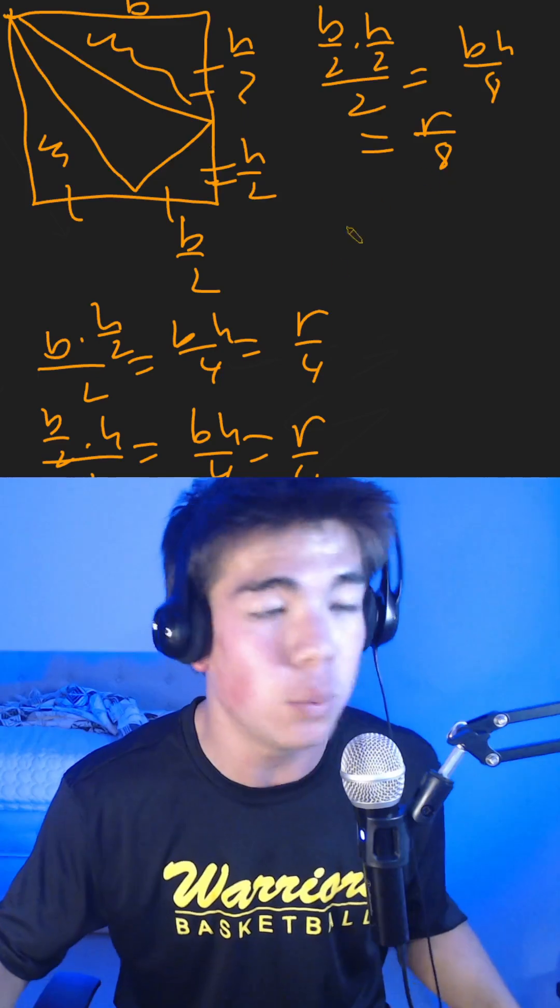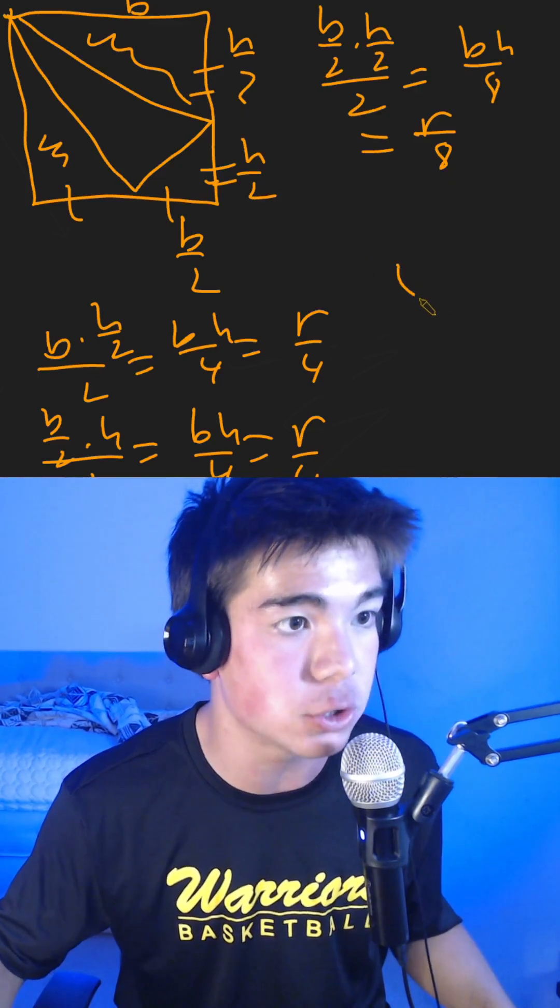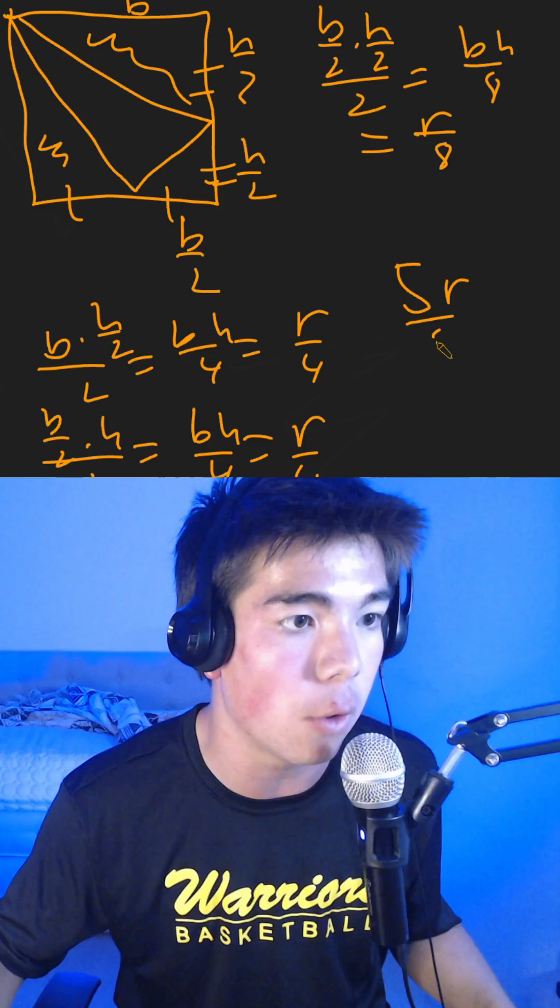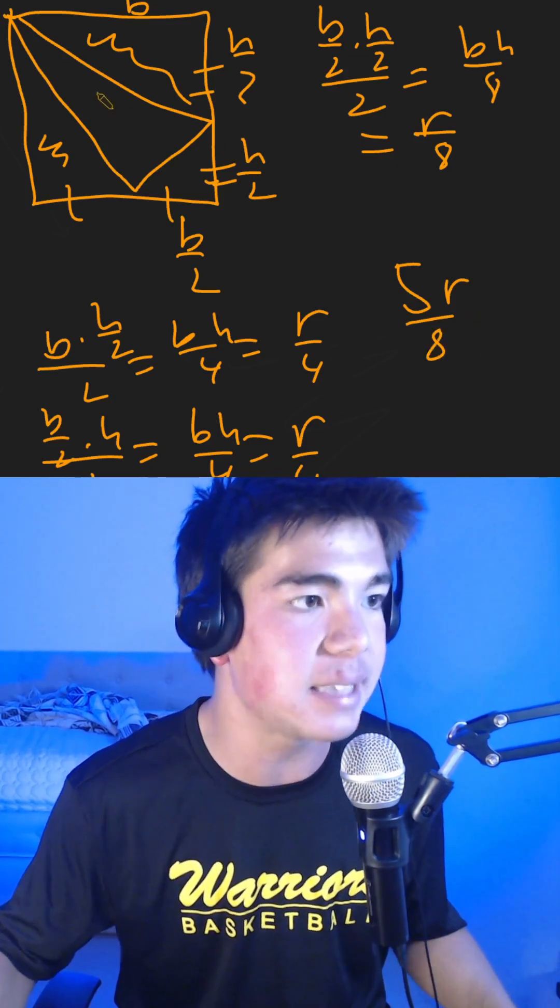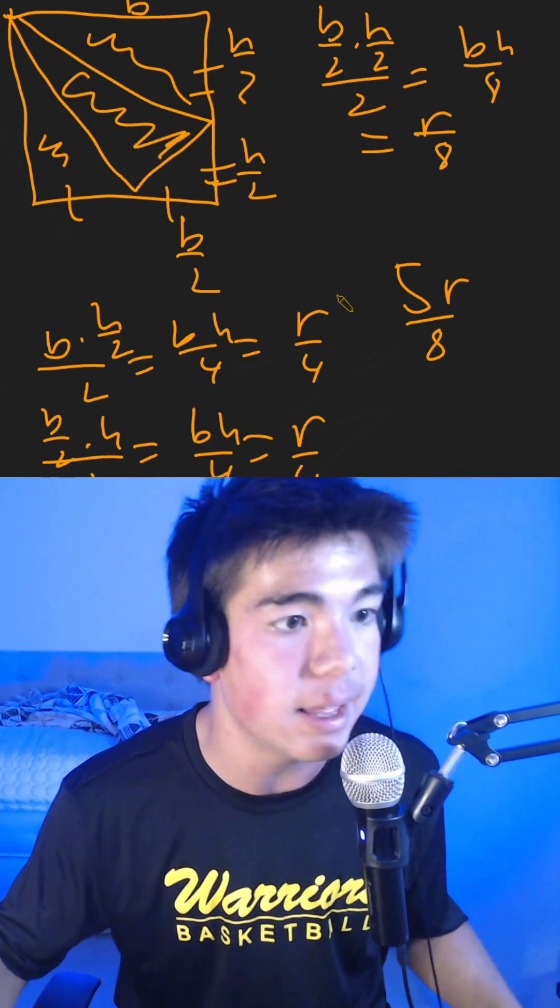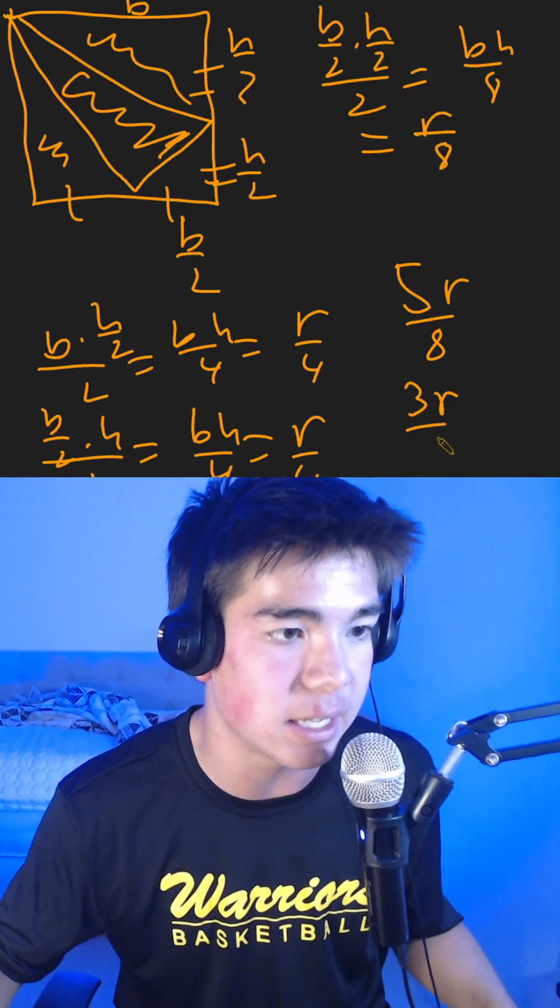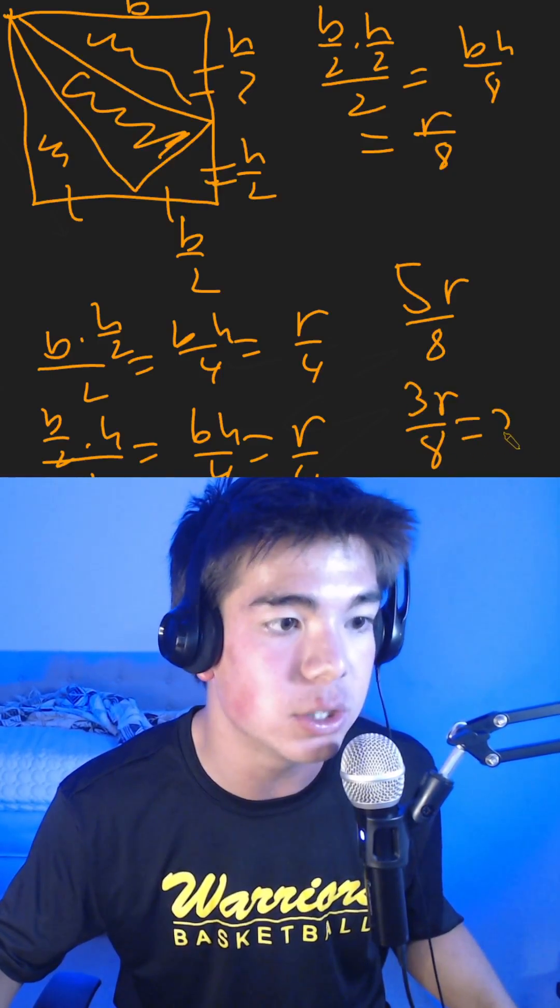Adding all three of these parts, we know that the area of all the other triangles is equal to 5 times the rectangle over 8. And that means that this area that we actually wanted is 3 times the area of the rectangle over 8. And this is equal to 27.